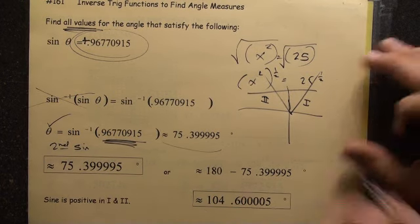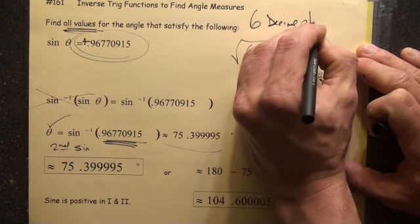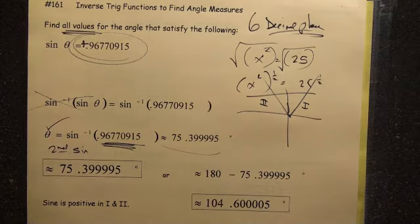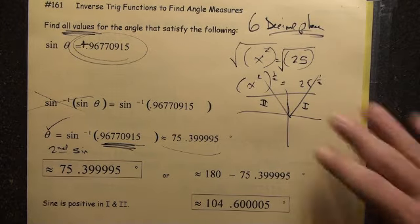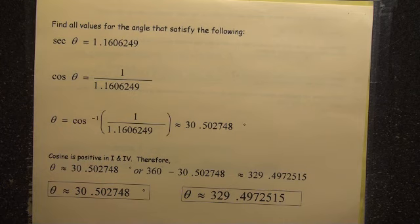We're going to round to six decimal places. Alright. Let's take a look at the next one. Here we go. Find all values for the angle that satisfy the following: secant of theta equals 1.1606249.